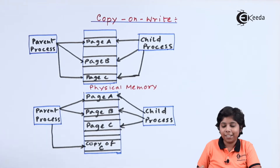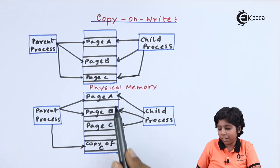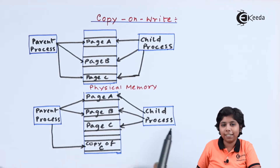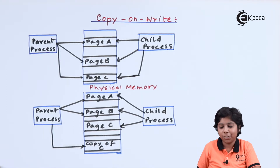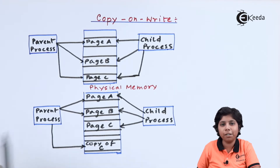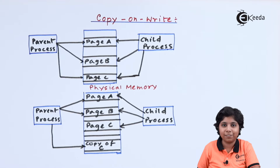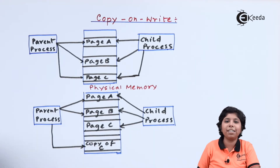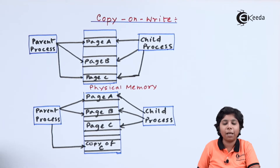Here we can see that along with page A and page B, the child process now contains its modified copy of page C, and a copy of that page C is given to the parent process as the copy on write page. This is how copy on write can be implemented between parent and child processes at the time of process creation.